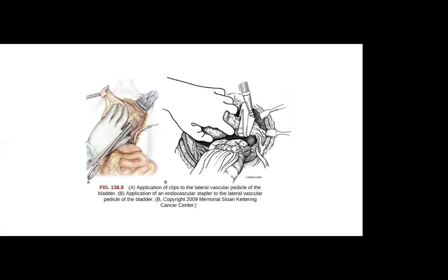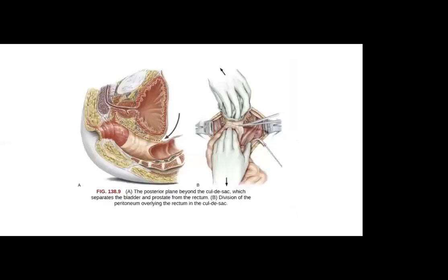Completion of lymphadenectomy aids in the exposure and identification of the vascular pedicle. To control this — including the superior, middle, and inferior vesicals — these are achieved with the aid of a vascular stapler, but in our case usually we tie this using a silk 2-0 non-absorbable suture. To divide the rectum, the peritoneum is incised where it overlaps the seminal vesicle. There is often a large tumor at the base of the bladder and care must be taken to ensure an adequate margin of resection at this point.